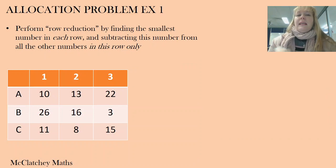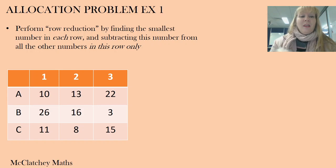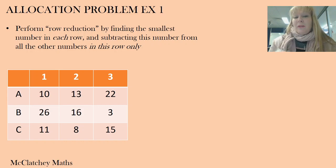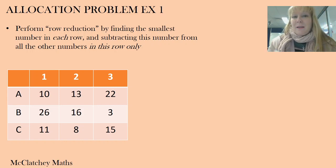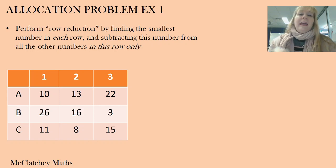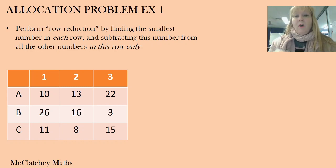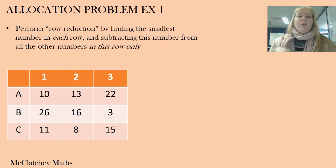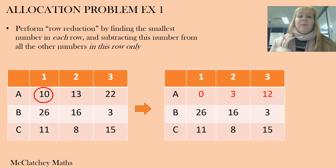Now we want to work out which warehouse should be delivering to which store. You could probably do this by inspection because it's a fairly easy solution — you can see that warehouse B should deliver to store 3, warehouse C to store 2, and warehouse A to store 1, because those are the smallest numbers in each column. That's a valid way to identify the most appropriate allocation. However, we're going to look at more complex ones, so let's do what's called row reduction on the matrix.